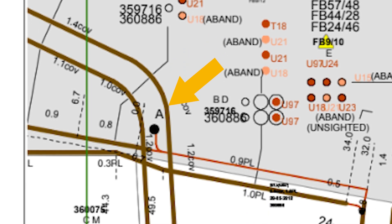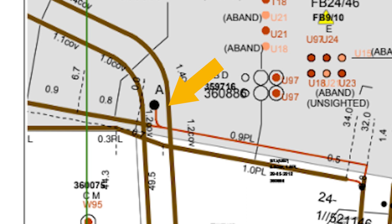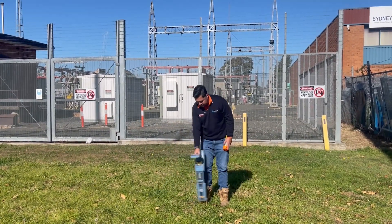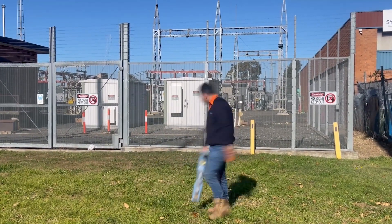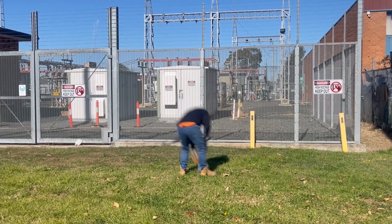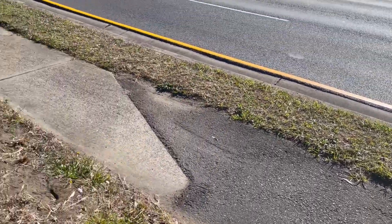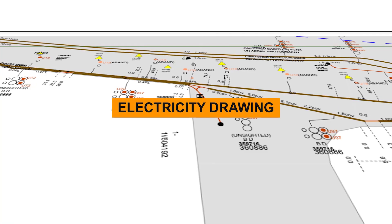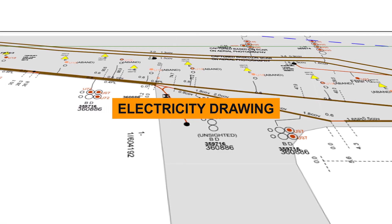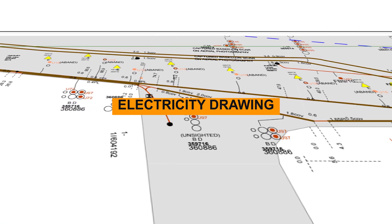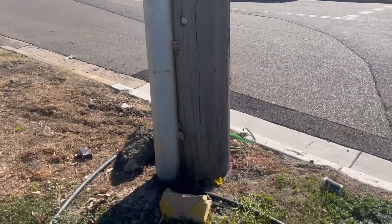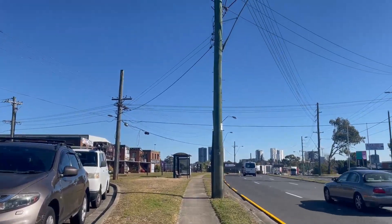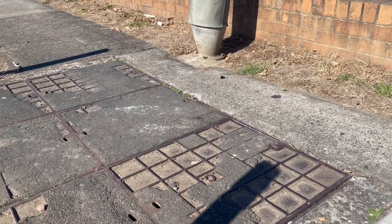Let's have a quick look at this Endeavour Energy electricity substation here in southwestern Sydney. As you can see on the plan, there are some high voltage conduits running through the road and bending into this substation. These are the cables I'm going to sweep over using the power mode on this Radio Detection receiver. I know that there are cables coming in roughly to the western side of this substation from the available electricity drawings.